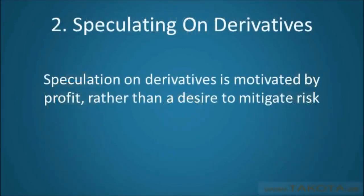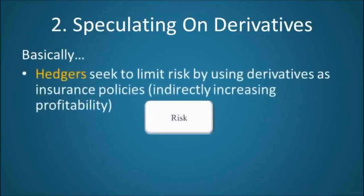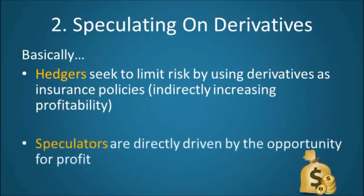The second main use of derivatives is speculation. Derivative speculation is fundamentally different from derivative hedging. Where derivative hedgers are trying to reduce their risk exposure and usually are not motivated by profit in the derivative market itself, derivative speculators are motivated purely by profit seeking. Basically, hedgers seek to limit risk by using derivatives as insurance policies, while speculators are directly driven by the opportunity for profit.